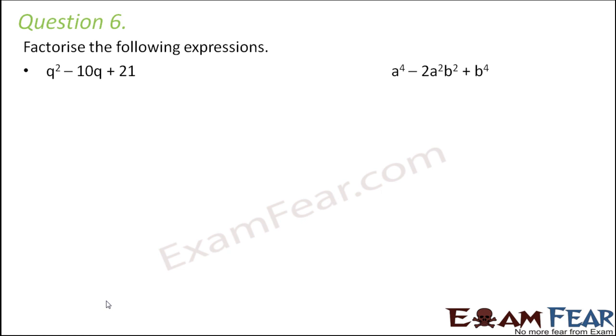In this case, q square is perfect square but 21 is not. So that means this will fall under the category of the special identity. That is x plus a into x plus b is equal to x square plus a plus b into x plus a into b.